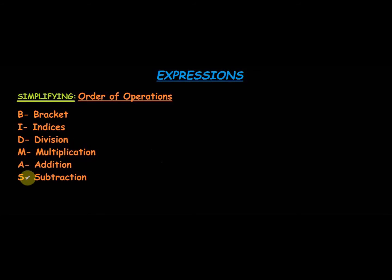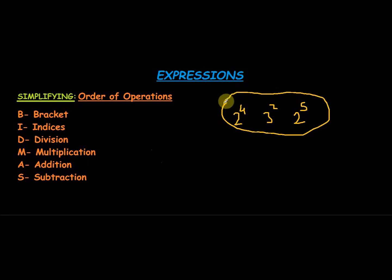If you are presented with an expression with a number of operations, the order to follow is: first simplify and expand any bracket, then simplify the indices — which are exponents like 2 raised to the power 4, or 3 raised to the power 2. After indices comes division, then multiplication, then addition and subtraction. Addition and subtraction can be done either way, but for bracket, indices, division and multiplication it is very important to follow this order.